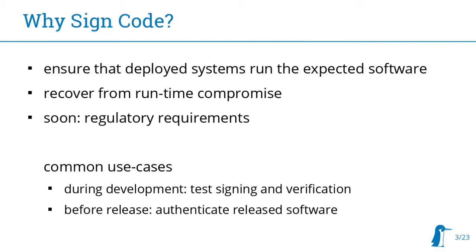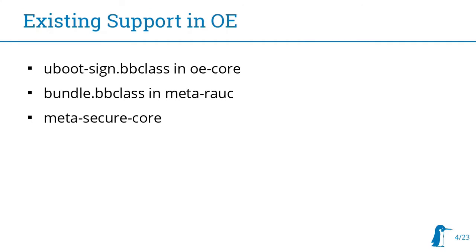Our common use cases at Pengutronics are: we want signing during development as well because we want to test the whole chain — otherwise it will just break at the customer. And before release we want to make sure that release software is authenticated by the devices in the field. There is already some existing support in OpenEmbedded for that; the uBoot signing class supports it via FIT images. We have something similar in barebox but that's not supported by OE, and it's only specific for uBoot. You have to have custom configuration in your BSP layer to sign kernel images so uBoot can authenticate them, and then you haven't covered kernel modules, the bootloader itself, and all that stuff.